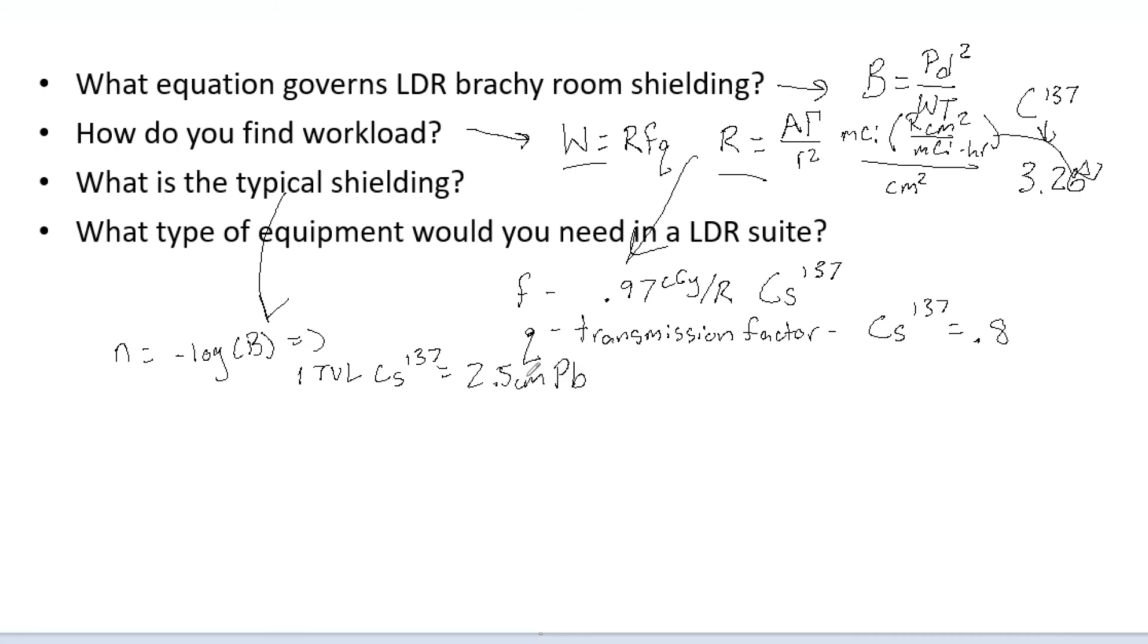One TVL for cesium-137 is equal to 2.5 cm of lead. And then just through practical experience and especially if you're studying for a test it's good to just kind of memorize the shielding requirements for a lot of the different machines. And for LDR we are looking at around 3 cm of lead. So circle that something you definitely want to remember.